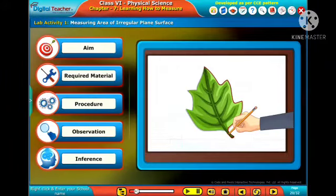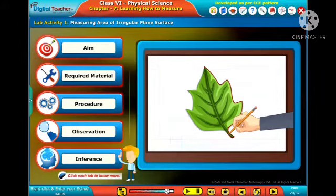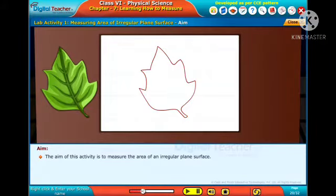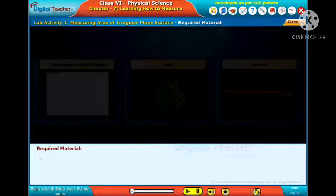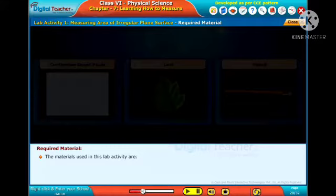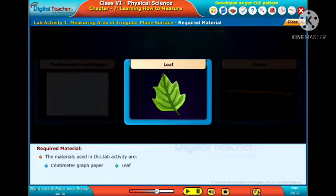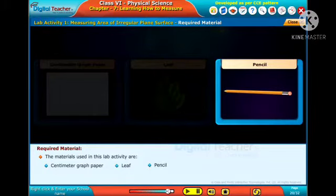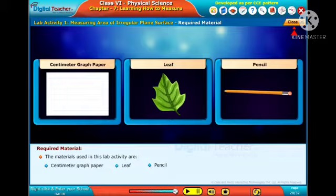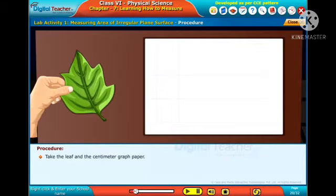We have measured the area of a regular surface. Now let us do a lab activity to measure the area of an irregular plane surface. The aim of this activity is to measure the area of an irregular plane surface. The materials used in this lab activity are: centimeter graph paper, a leaf, and a pencil.